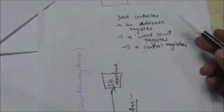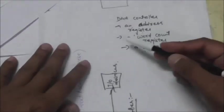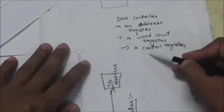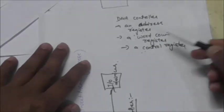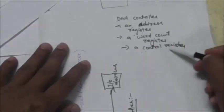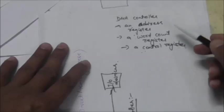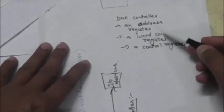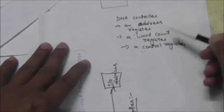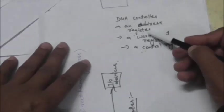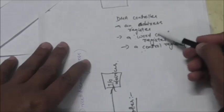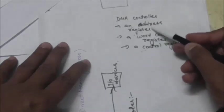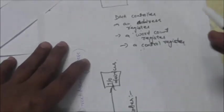A DMA controller has an address register, a word count register, and a control register. This control register specifies the transfer mode. The word count register specifies the number of words to be transferred. And the address register contains an address which specifies the memory location of the data to be transferred.